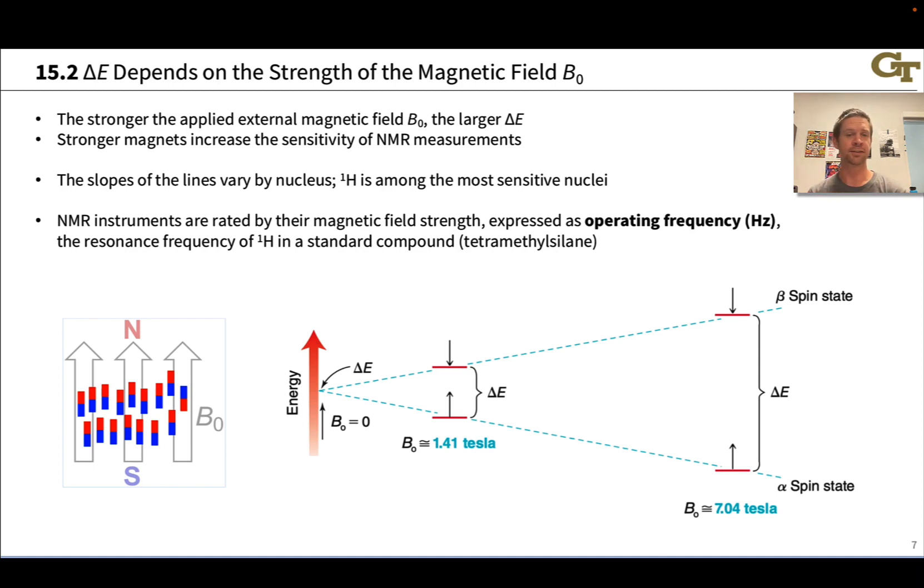The first thing to mention here is that this energy difference between the parallel and anti-parallel spin states for the nucleus in the external magnetic field depends on the strength of that magnetic field. The stronger the magnetic field, the greater the energy difference. So stronger magnets actually increase the sensitivity of NMR measurements. This has been a big push in NMR instruments for decades now. We've been pushing to higher and higher magnetic fields to get greater sensitivity and greater resolution.